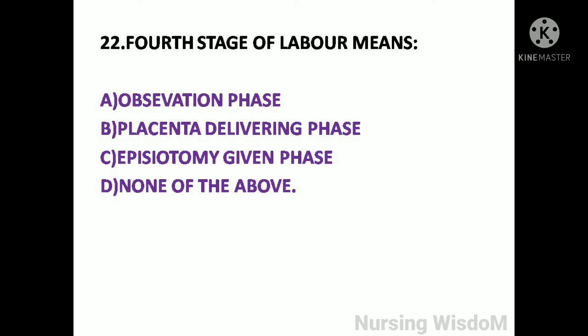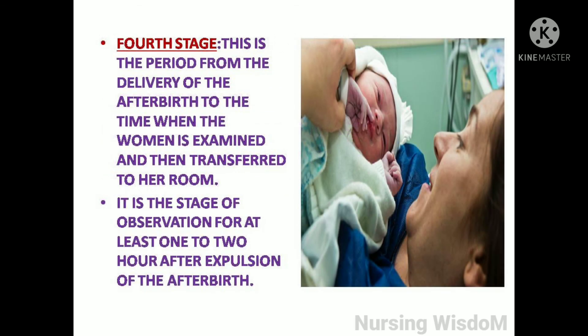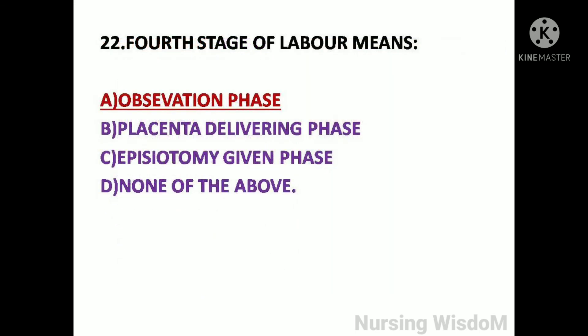Next question: Fourth stage of labor means — option A: observation phase; option B: placenta delivering phase; option C: episiotomy given phase; option D: none of the above. The fourth stage is the period from the delivery of the afterbirth to the time when the woman is examined and then transferred to her room. This is the stage of observation for at least one to two hours after expulsion of the afterbirth. So here the answer is option A, observation phase.